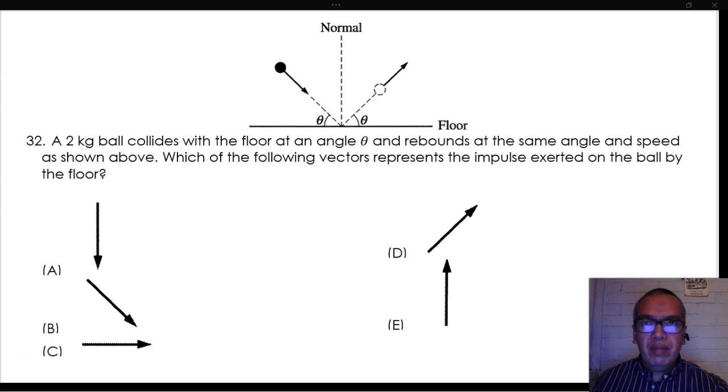Which of the following vectors represents the impulse exerted on the ball by the floor? The Impulse-Momentum Theorem states that the impulse of an object is equal to the change in momentum it shows.